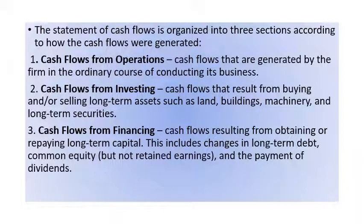The statement of cash flows is organized into three sections according to how the cash flows were generated. The first section is cash flows from operations, which are generated by the firm in the ordinary course of conducting its business. The second section is cash flows from investing, resulting from buying or selling long-term assets such as land, buildings, machinery, and long-term securities. Finally, we have cash flows from financing, resulting from obtaining or repaying long-term capital, including changes in long-term debt, common equity, and payment of dividends.